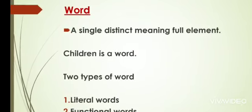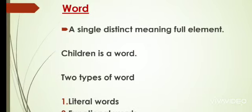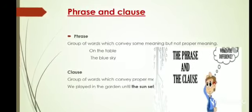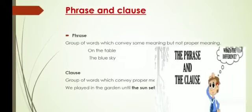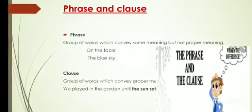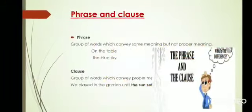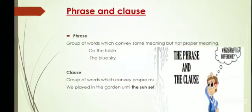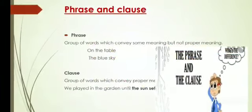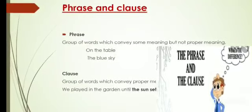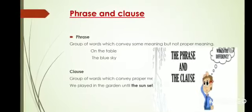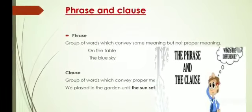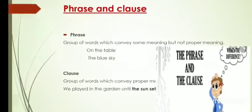Now we will discuss what a phrase and clause are. A group of words that conveys some meaning but not complete meaning is called a phrase. Those words that convey complete meaning are known as a clause, and a clause always has a subject and a predicate. For example, 'on the table' and 'the blue sky' are phrases. Students often get confused between a phrase and a clause.